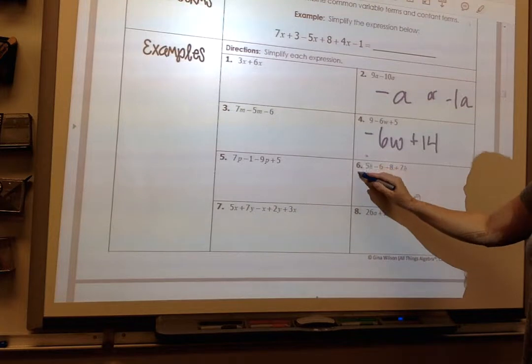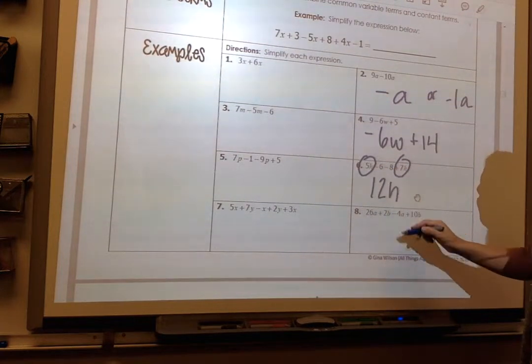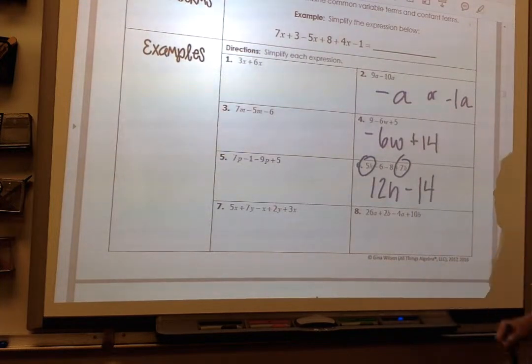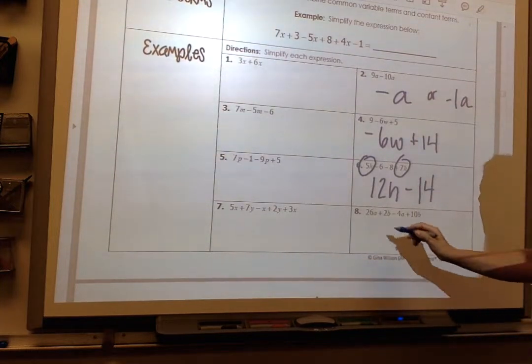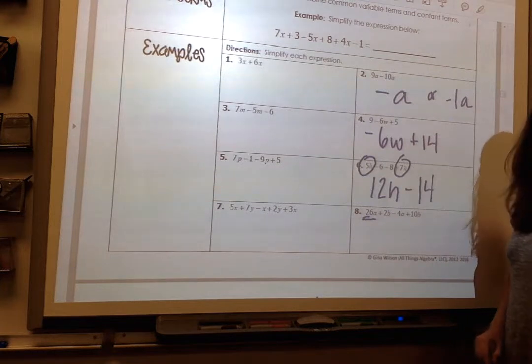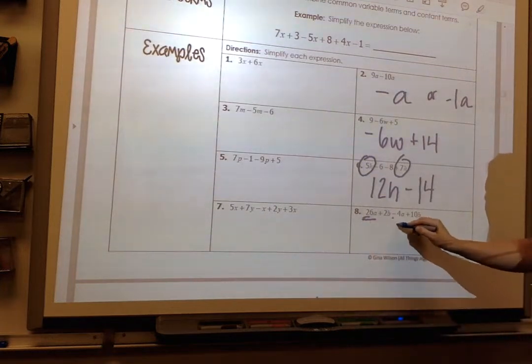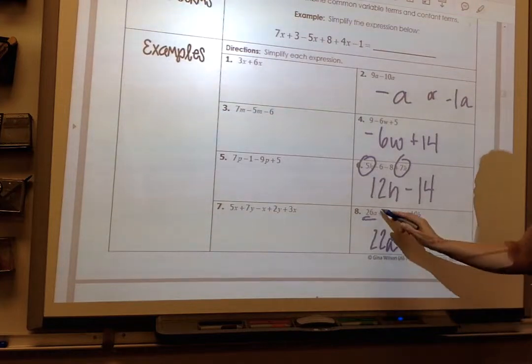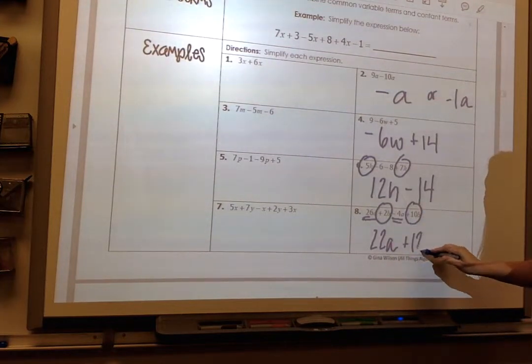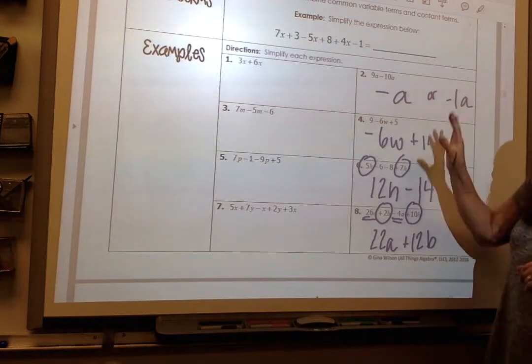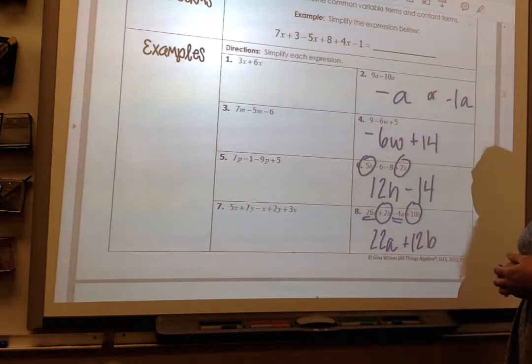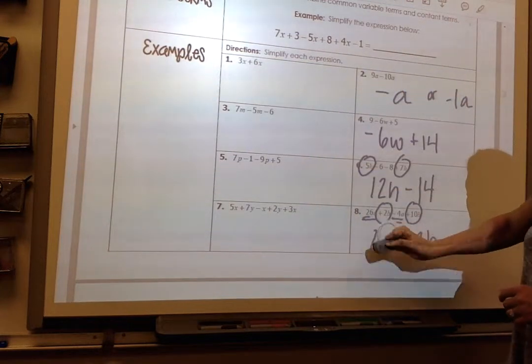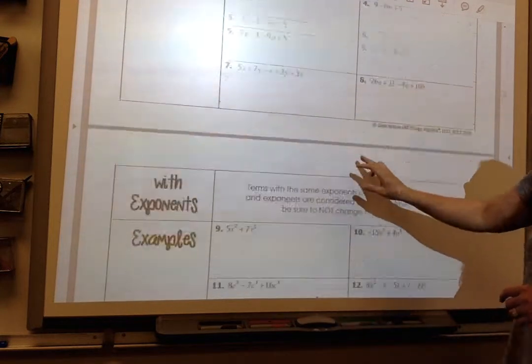Number 6, when I combine my variable terms, I get 12h, and my constant term is negative 14. And this last one, number 8, I have two variable terms that can be combined. So I've got 26a and negative 4a to make it 22a, and I have a 2b and a 12b, and I get plus 14b. So those are my answers here for the even ones.